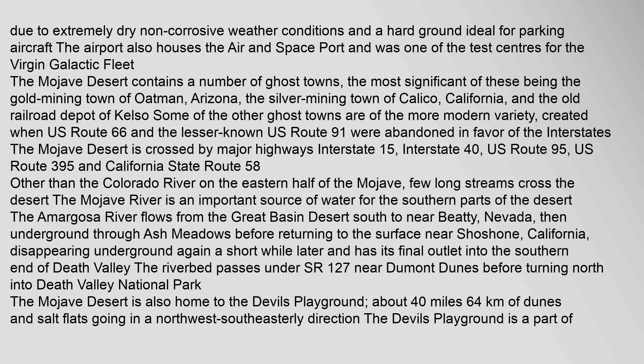Other notable ghost towns include the silver mining town of Calico, California, and the old railroad depot of Kelso. Some of the other ghost towns are of the more modern variety, created when U.S. Route 66 and the lesser-known U.S. Route 91 were abandoned in favor of the interstates. The Mojave Desert is crossed by major highways: Interstate 15, Interstate 40, U.S. Route 95, U.S. Route 395, and California State Route 58.